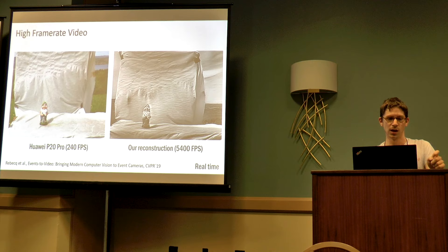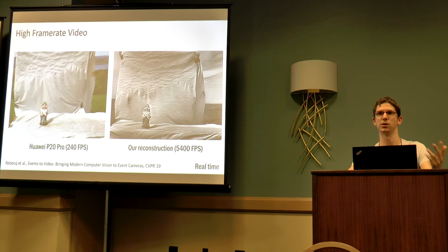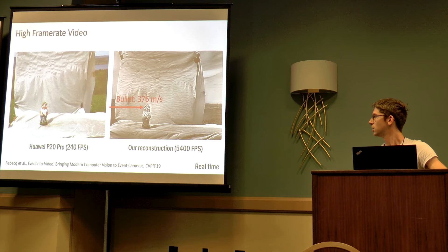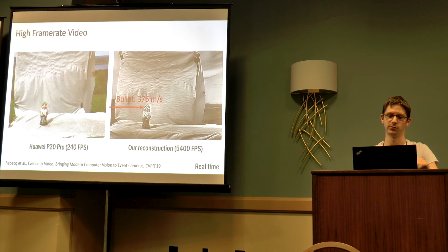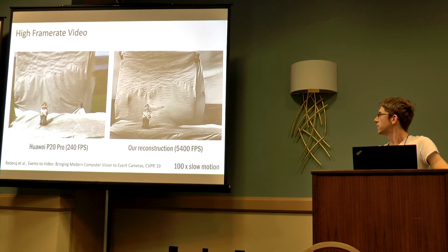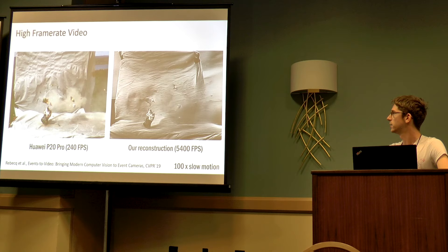Our first example is high frame-rate video. Event cameras have very high temporal resolution, which means you can decompress the event stream into a video with an arbitrarily high frame rate. To push this, we shot a garden gnome with a gun — a bullet coming at nearly the speed of sound hitting the gnome's head. On the left you see a state-of-the-art image sensor at 240 frames per second, and our reconstruction on the right at about 5,000 frames per second. In 100x slow-mo, you can capture fine details that would be invisible to a regular frame camera.